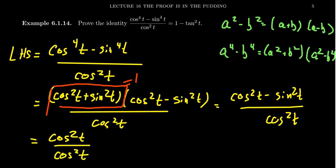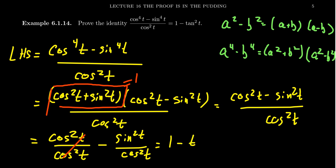The final right-hand side doesn't have a fraction at all. If you break this up into two fractions, you get cosine squared over cosine squared minus sine squared over cosine squared. Cosine squared divided by cosine squared gives you one because they cancel out. And the remaining thing — sine squared over cosine squared — is exactly tangent squared. So we have one minus tangent squared t, which is the right-hand side we were seeking, and therefore we've proven this trigonometric identity.